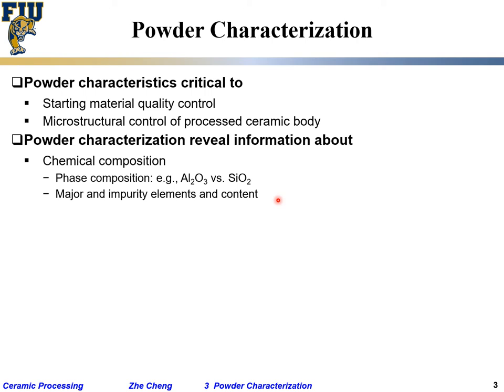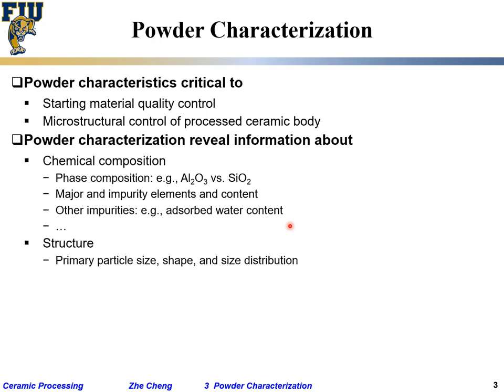For example, if we have a titanium powder, we look at how much impurity aluminum or iron is present. Other impurities include absorbed moisture, absorbed carbon dioxide, or other gases in the system.